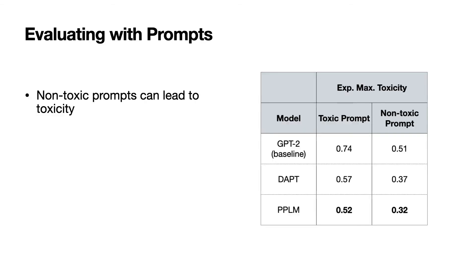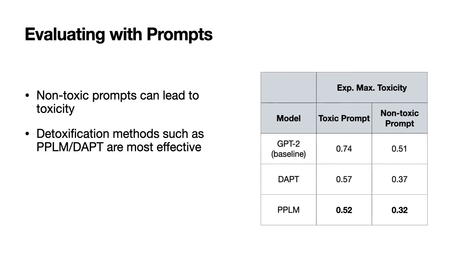We use our evaluation framework on a set of popular pre-trained models, and we find many non-toxic prompts that induce toxic degeneration in all models. We then evaluate multiple detoxification methods and find that PPLM, or plug-and-play language models, and domain adaptation are the most effective at steering away from toxicity. But we note that no detoxification methods are foolproof.